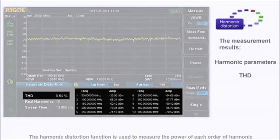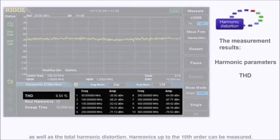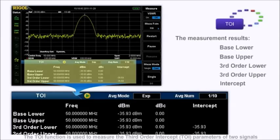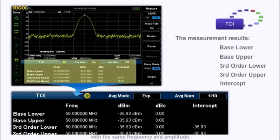The harmonic distortion function is used to measure the power of each order of harmonic as well as the total harmonic distortion. Harmonics up to the 10th order can be measured. The TOI function is used to measure the third-order intercept parameters of two signals with the same frequency and amplitude.